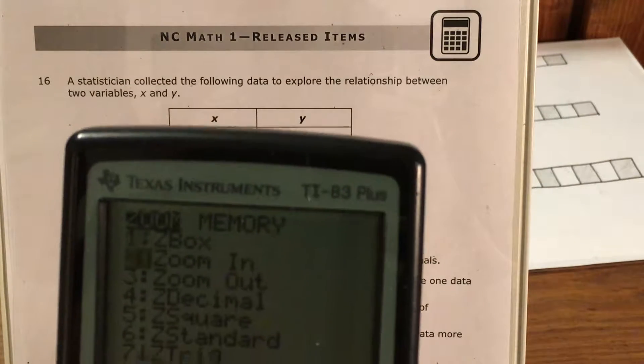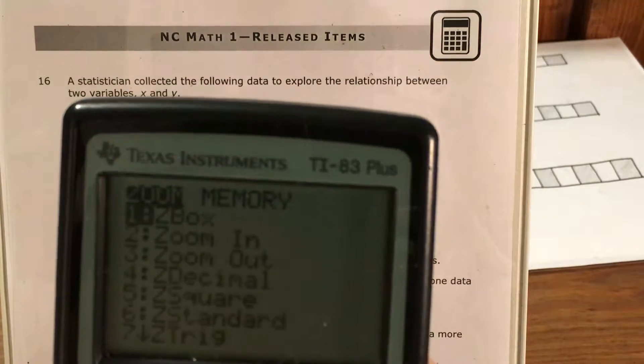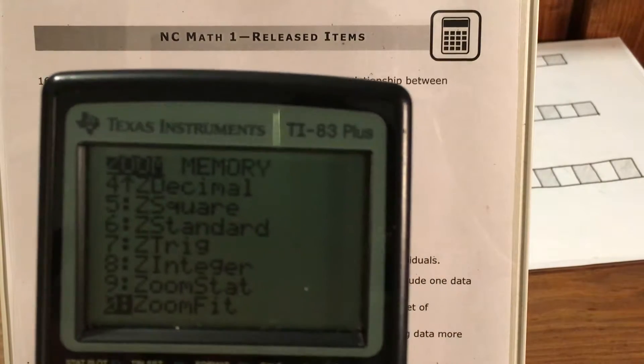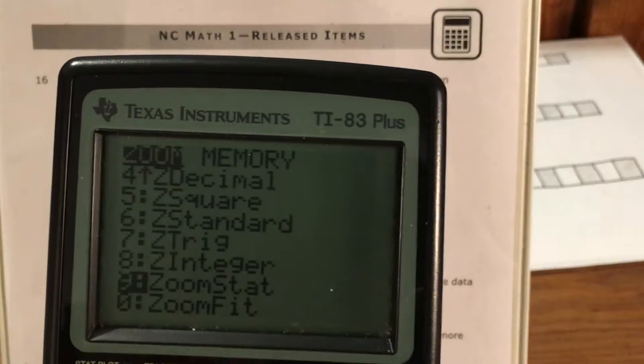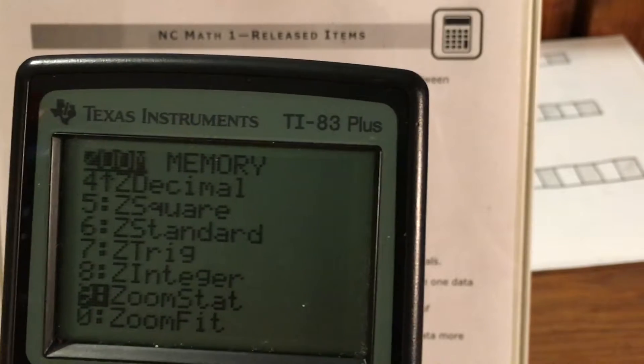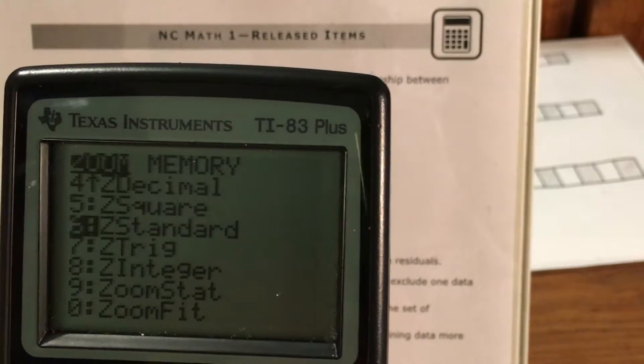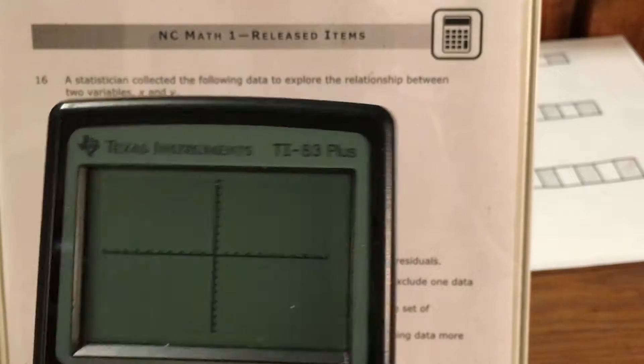So now I need to figure out how to zoom it. This is the command that I want to use, zoom stat. Because if I went ahead and did z standard, which is what you do to get it back to the original data, I can't see anything.